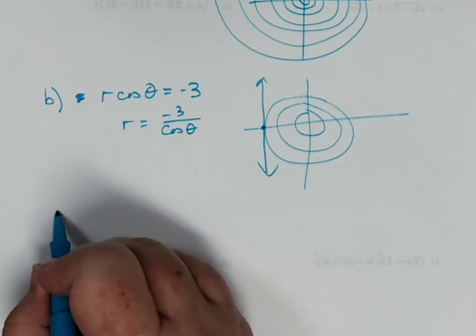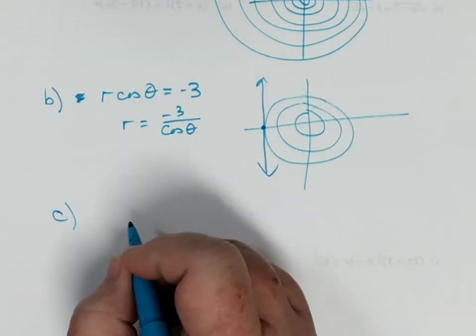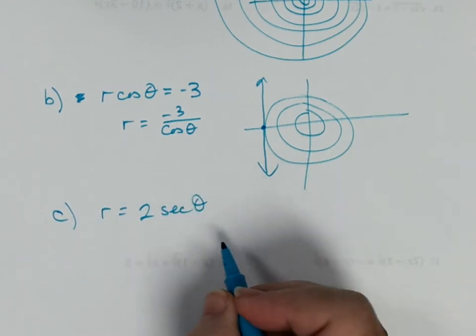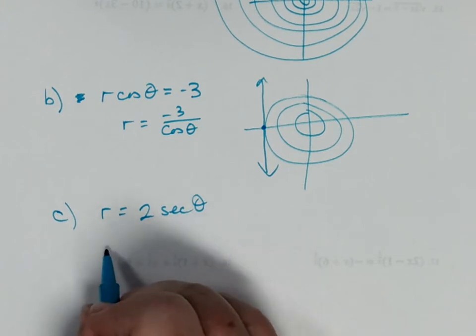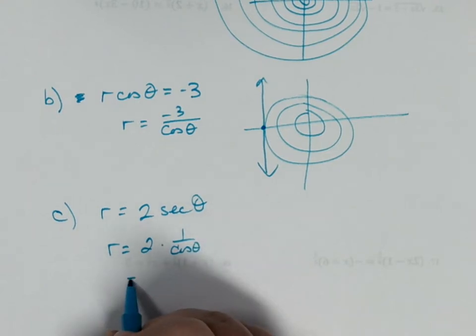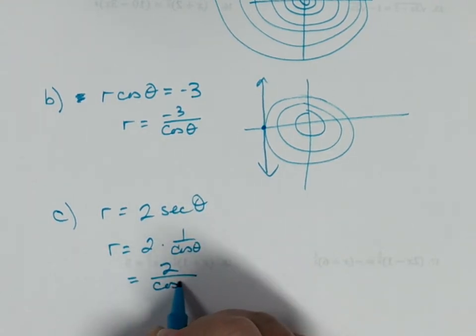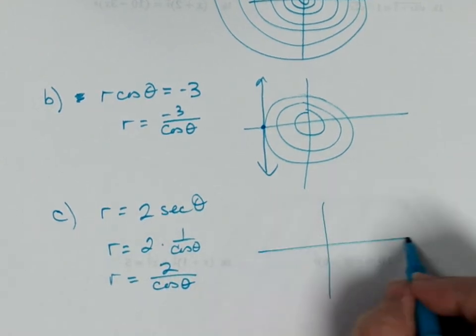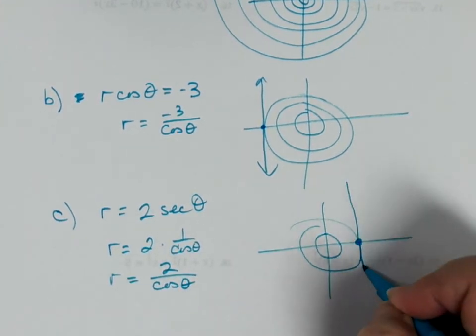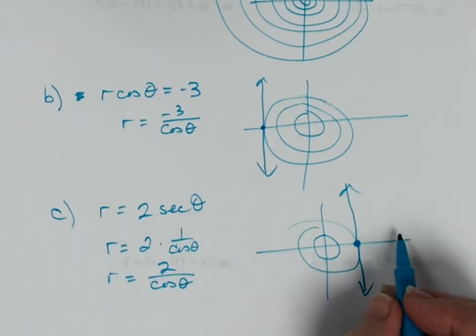The last one is a different format, but it's the same type of equation. r equals 2 secant of theta. Well, we know that secant of theta is 1 over cosine, so I'm going to rewrite this as 2 times 1 over cosine of theta, which is 2 over cosine of theta. So once again, I am looking at a vertical line, this time to the right of the pole. I would have 2 circles, and it would pass through 0, 2, and make a vertical line. And notice that's 0 degrees with a radius of 2.